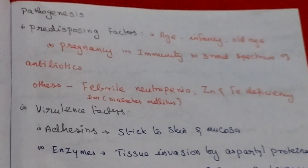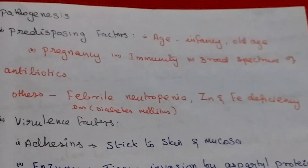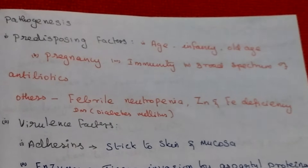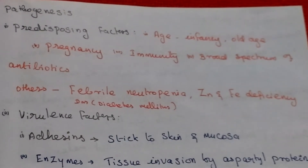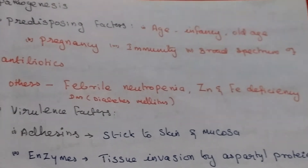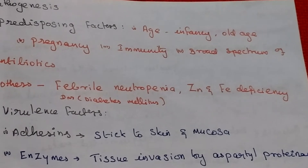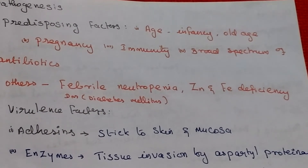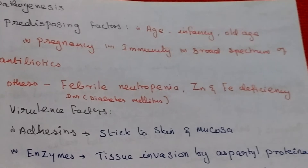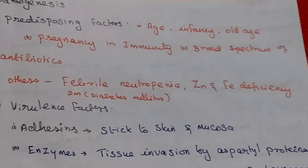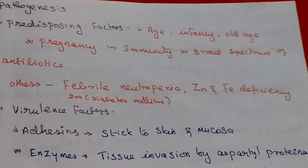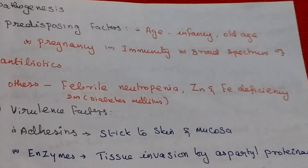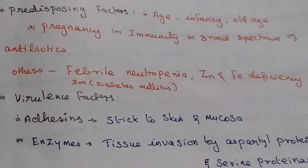Pathogenesis has two factors: predisposing factors and virulence factors. Predisposing factors include age — it may be infancy or old age — pregnancy, immunity, and broad spectrum antibiotics. Others include fever, neutropenia, zinc and iron deficiency, and diabetes mellitus.